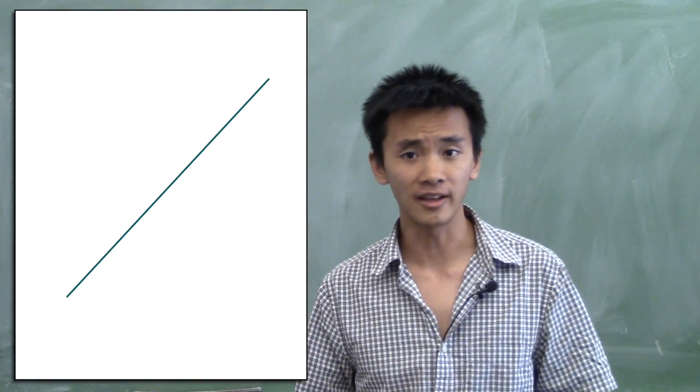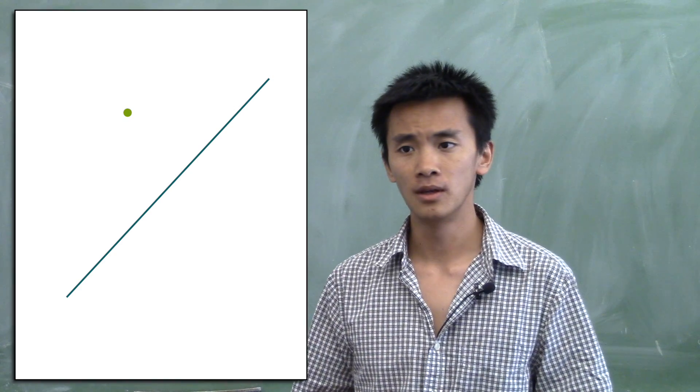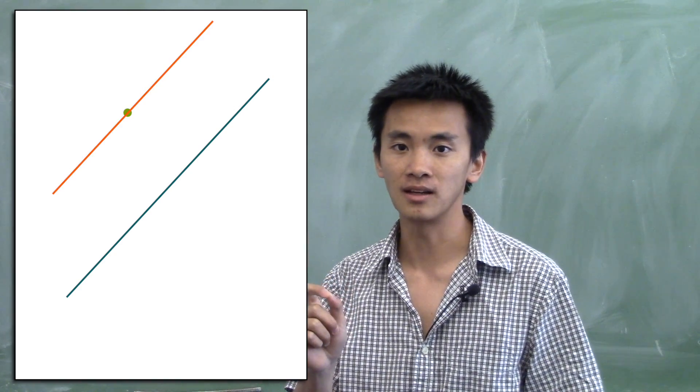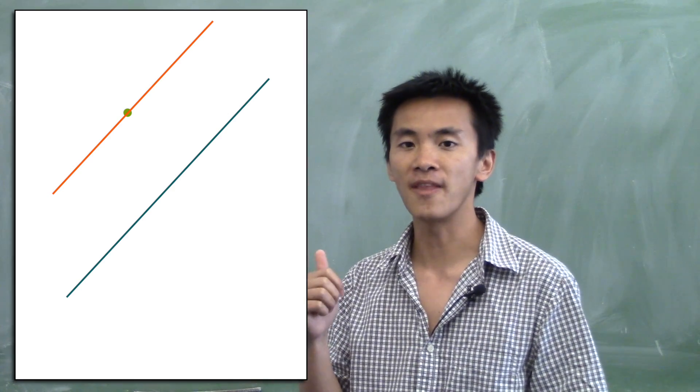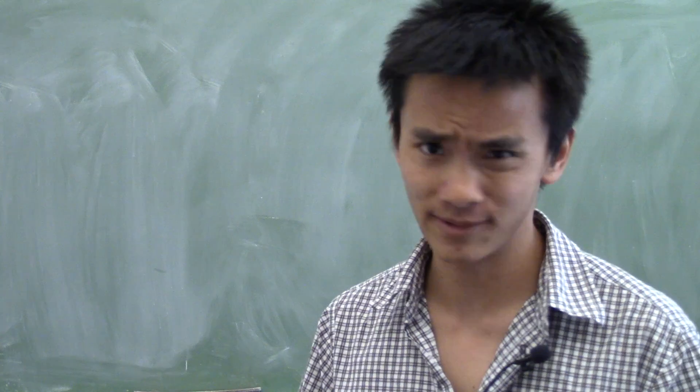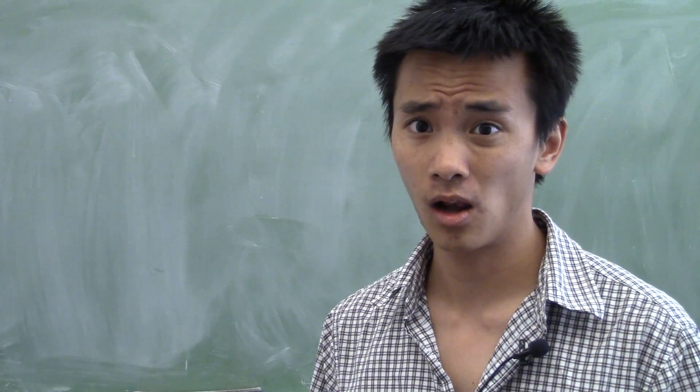Well, it says that if I give you one line and one point, you can always find one and exactly one other line that goes through this point and that never intersects the line I started with. Pretty obvious, right? Well, no!